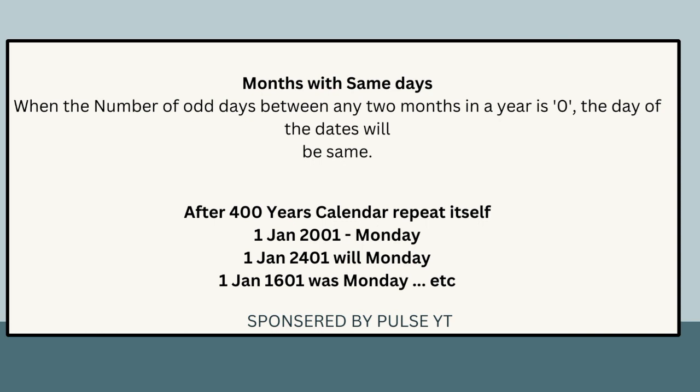Months with same days: when the number of odd days between any two months in a year is 0, the day of those dates will be the same. After 400 years, the calendar repeats itself — for example, 1st January 2001 was Monday, so 1st January 2401 will also be Monday, and 1st January 1601 was also Monday.